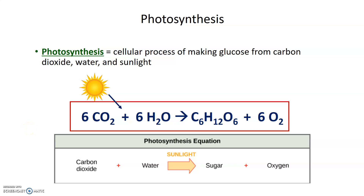Photosynthesis is the process of making glucose or sugar from carbon dioxide, water, and sunlight. In the process of making the sugar, oxygen gas is also created and released as a byproduct.